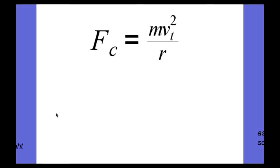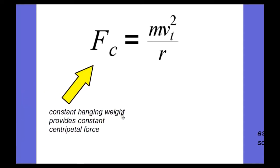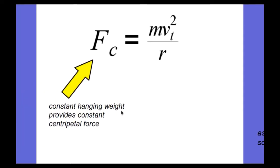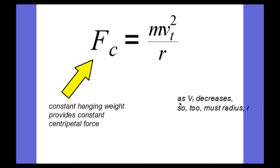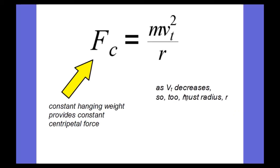Let's apply Newton's second law for uniform circular motion. The centripetal force equals mv² over r. The centripetal force is provided by the hanging weight, which is not changing, so the tension in the string remains constant. That means the right side of the equation must also remain constant. As tangential velocity decreases due to slight friction, the radius must also decrease to keep the fraction constant.